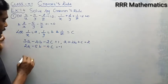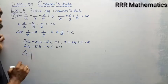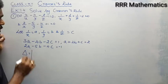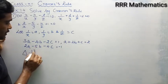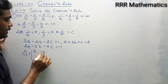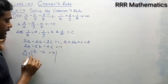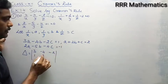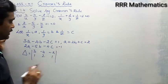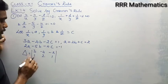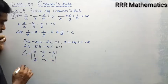Now find out Delta. What is Delta? It is the coefficient matrix of a, b, c. From the first equation: 3, minus 4, minus 2. Second equation: 1, 2, 1. Third equation: 2, minus 5, minus 4.